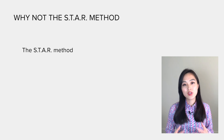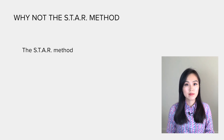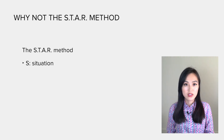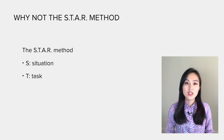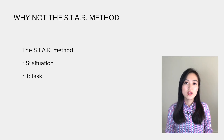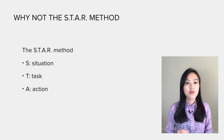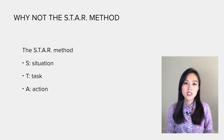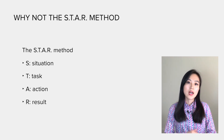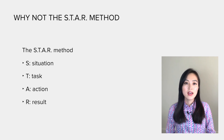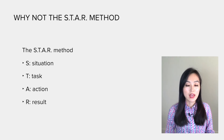For those unfamiliar with the STAR method, it's a popular framework for answering behavioral questions. S stands for Situation — set the scene and provide necessary details. T for Task — describe your responsibility in that situation. A for Action — explain what action items you took. R for Results — share what outcomes your actions achieved. It makes sense to tell a story this way: start with context, then what you did, then the results.